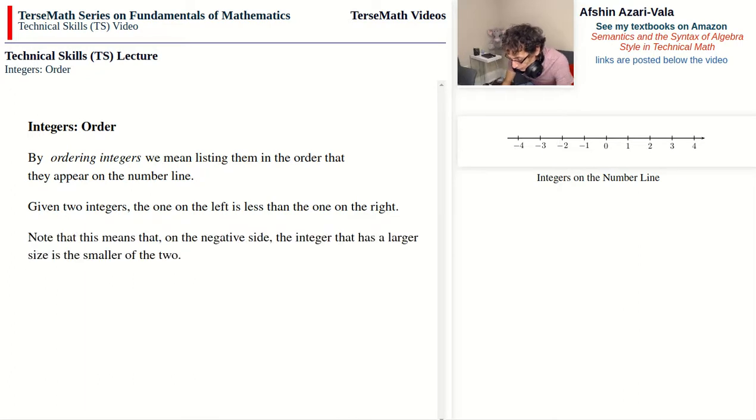And it should be noted that this implies that on the negative side, the number that has a larger size is actually the smaller of the numbers. If you have two numbers, the one with the larger size is the smaller of the two, and the one with the smaller size is the larger of the two.